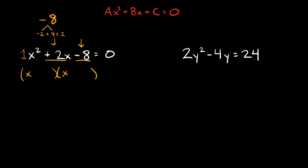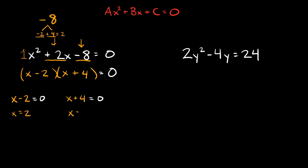So the two numbers we found — negative 2 and positive 4 — go into our parentheses: (x - 2)(x + 4), and this is all equal to zero. To solve for x, take each parenthesis and set it equal to zero: x - 2 = 0 and x + 4 = 0. So x = 2 and x = -4 are your two answers.